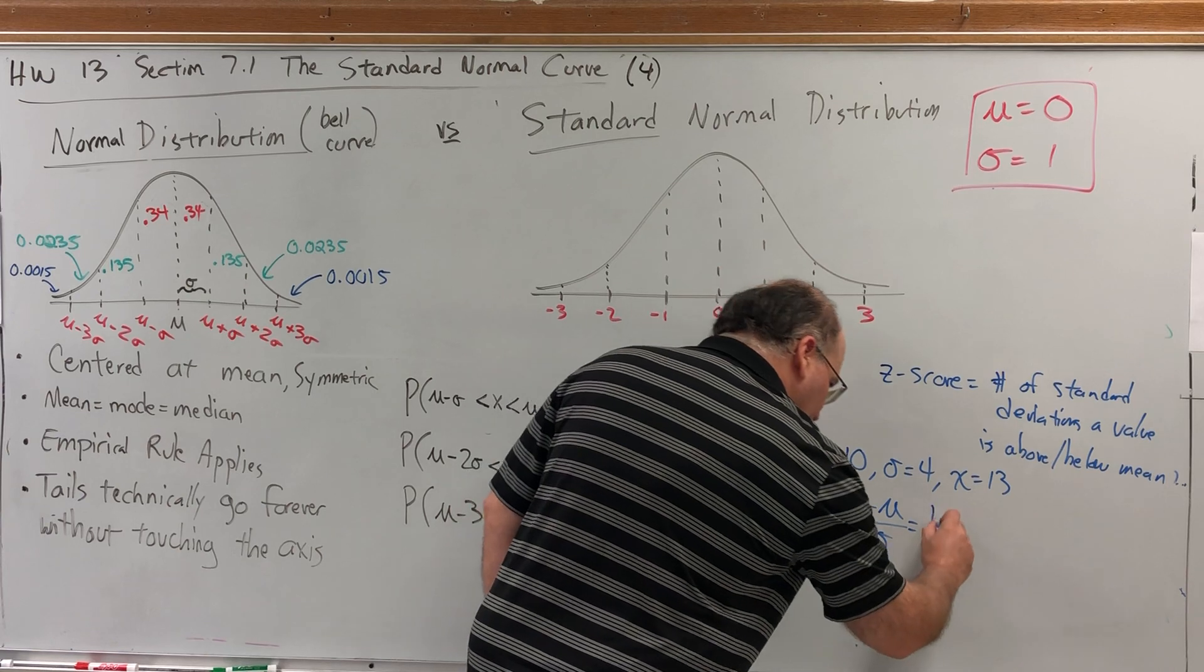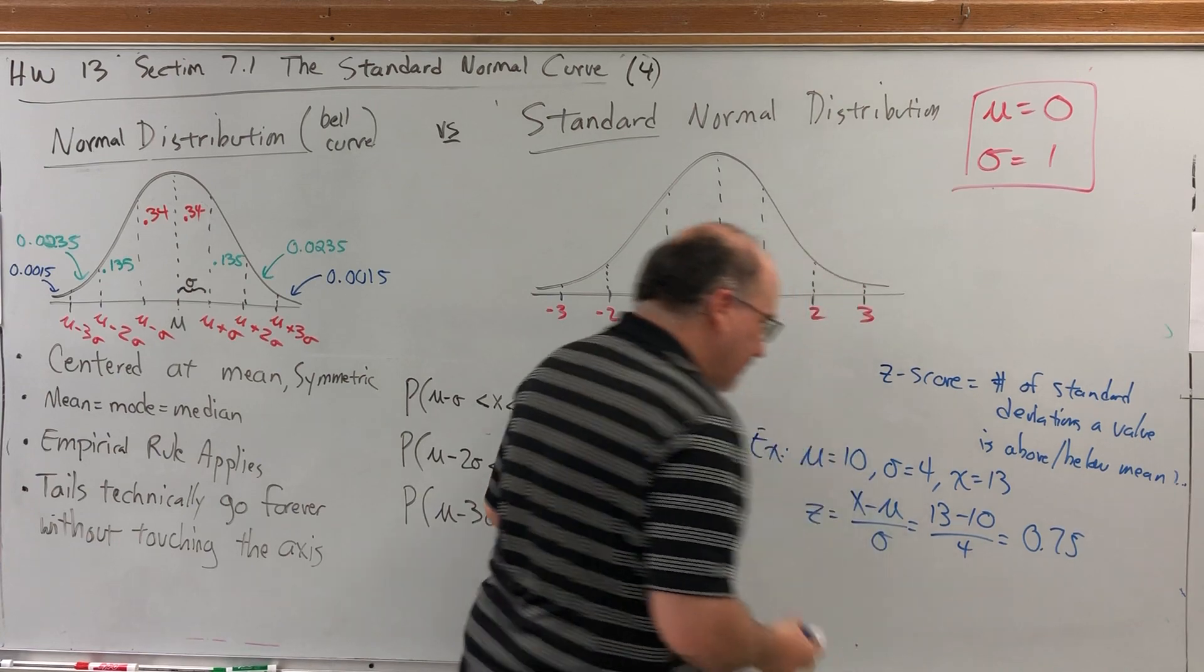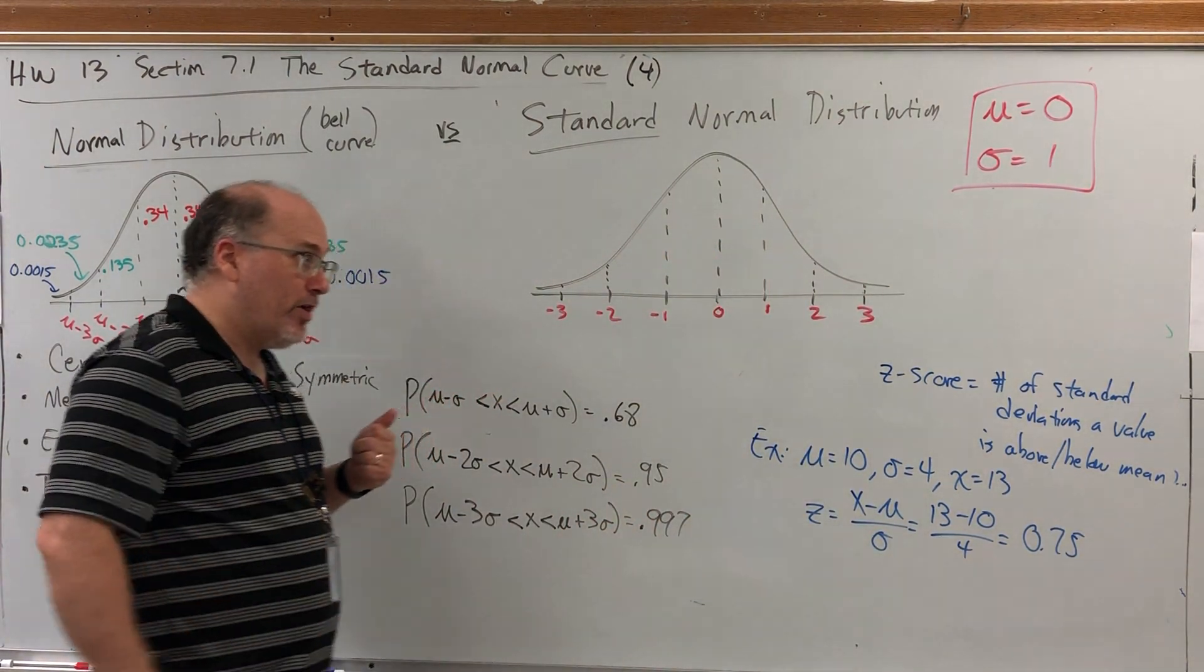which would be 13 minus 10 over 4, which is 0.75. That's all the z-score is. How many standard deviations away from the mean are you?